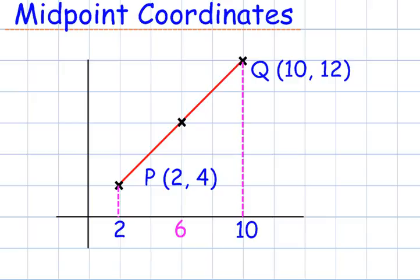Now, let's have a look at the y-coordinates. P goes up to 4, and Q goes up to 12. The midpoint of 4 and 12 is 8, and so the midpoint of PQ is 6, 8.